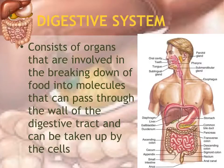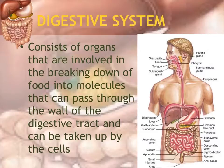The digestive system is made up of various organs, and their job is to break down food, produce chemicals that help with breaking down the food, and once it's broken down, that food is passed along the wall of the digestive tract and carried by the cardiovascular system to the tissue where it is used for producing energy.